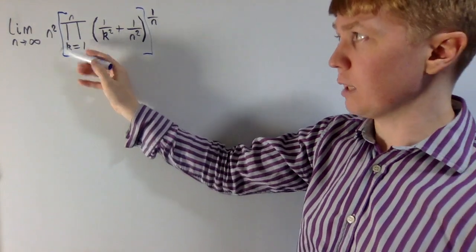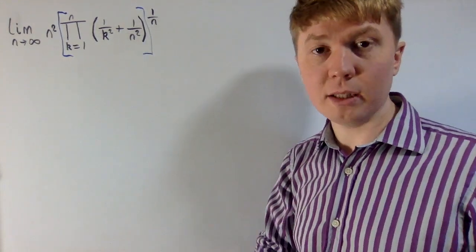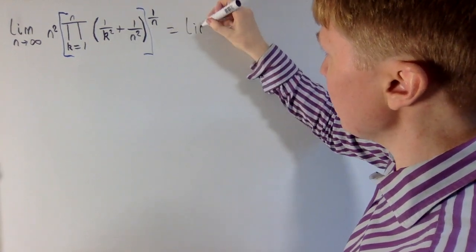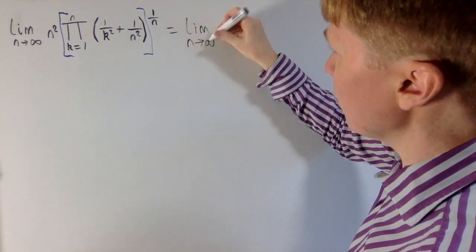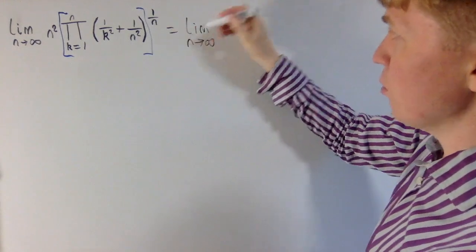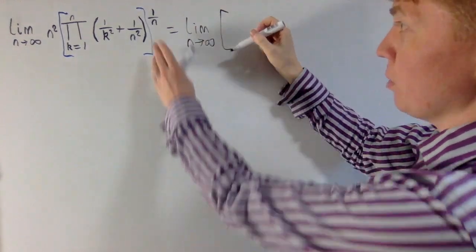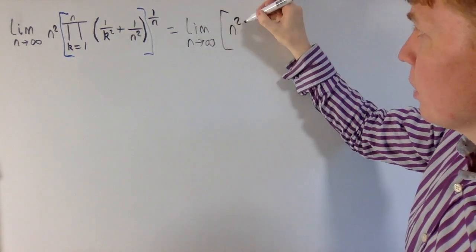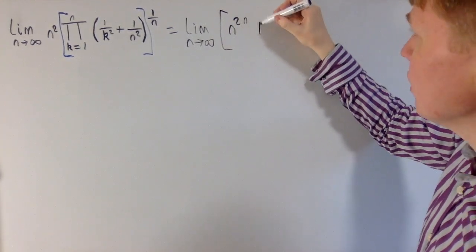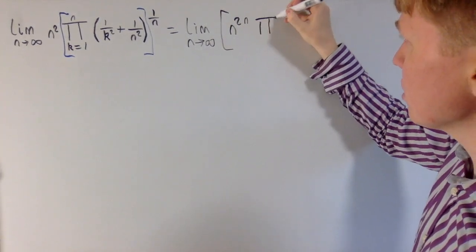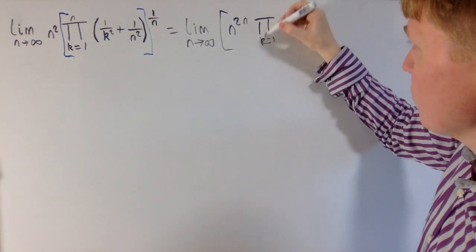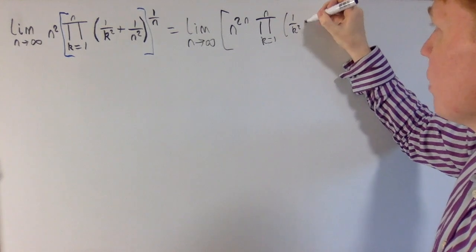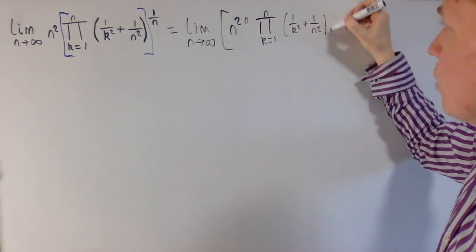That gives us a nice bracket. We can take our n squared inside the bracket now, and this is going to give us still the limit as n goes to infinity. When we take the n squared inside the bracket, because the bracket is all being raised to the power of 1 over n, this has to turn into n to the power of 2n — check with your laws of indices. So we get still the same product, but multiplied by n to the power of 2n, with 1 over k squared plus 1 over n squared.